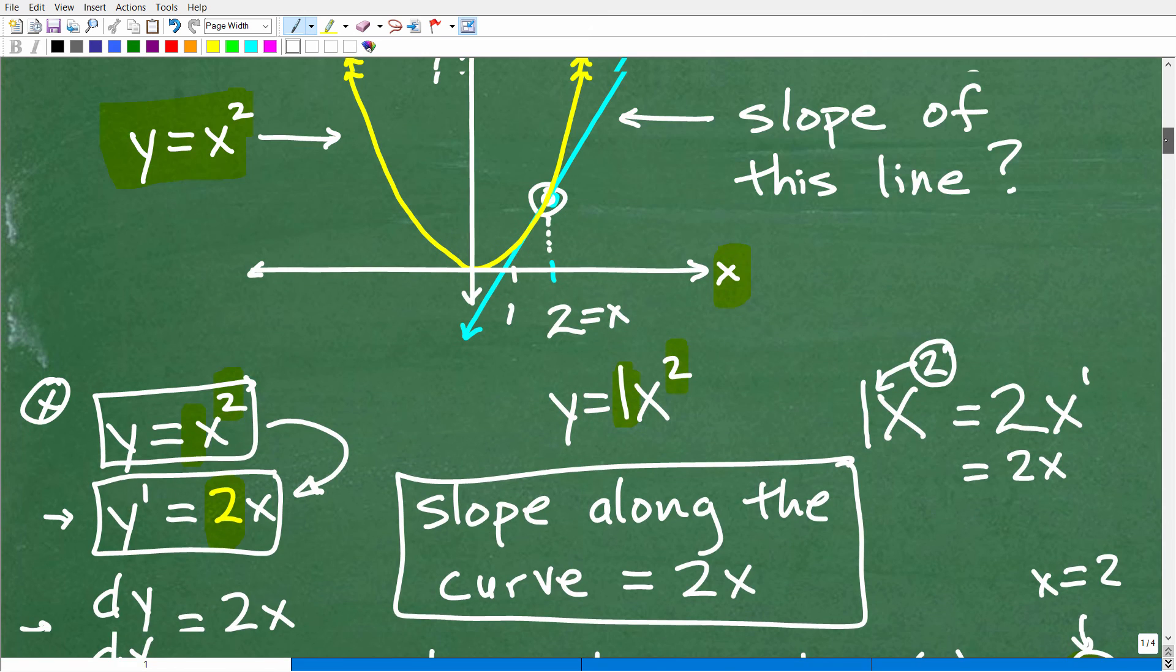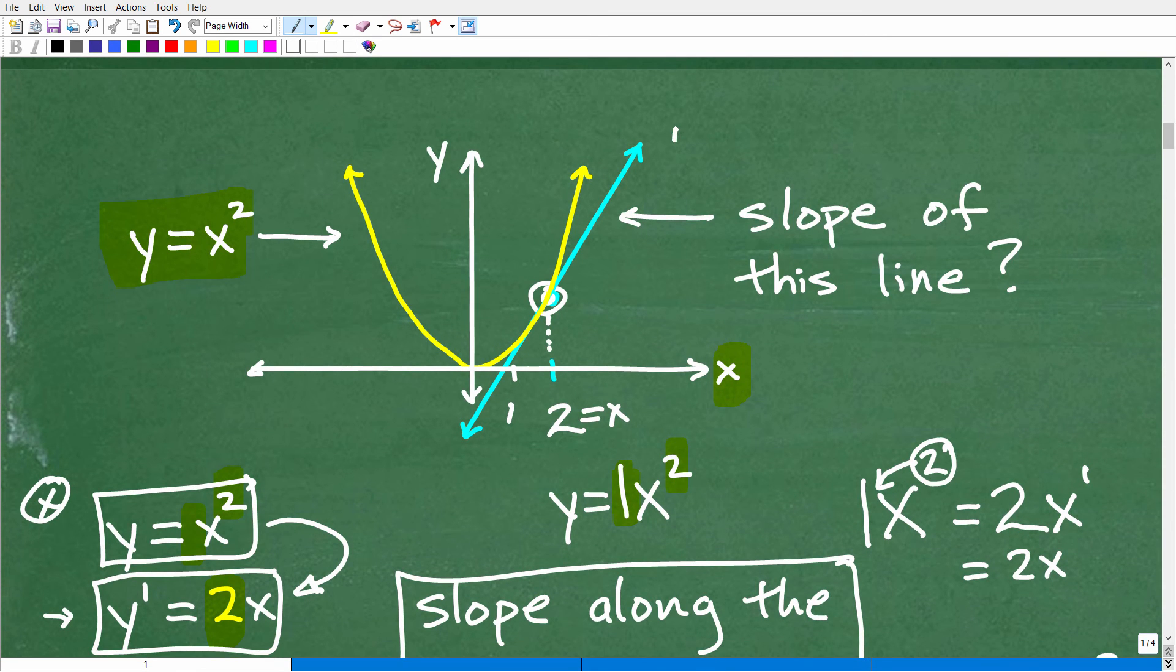So the slope of this line right here is four or four over one. This is the rise. This is the run. Now, this particular sketch here isn't drawn perfectly to scale. But basically, this line rises four for every one it runs out. That is the slope of this line. And that is it.